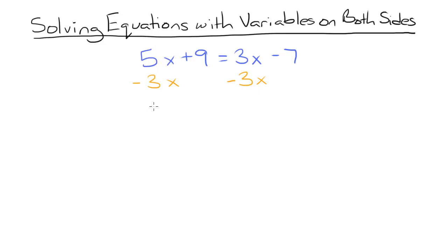So 5x minus 3x is 2x. The plus 9 stays the same because we didn't do anything to it. Our 3x's cancel out on the right side and we're left with negative 7.